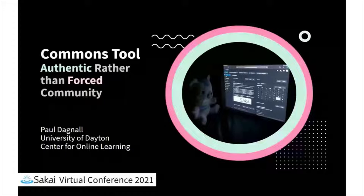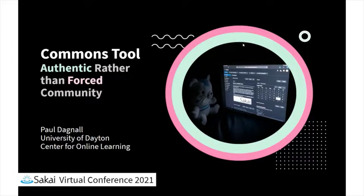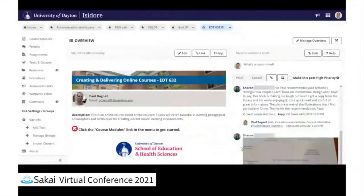All right. Can you hear me okay? Yes, we can. We're good. All right, so I'll get started. Like Martin said, we're going to talk about the Commons tool. I'm Paul Dagnall from the University of Dayton. I know the only thing you don't want to do when you're doing a lightning talk is talk about how little time you have, so I won't waste any time doing that.